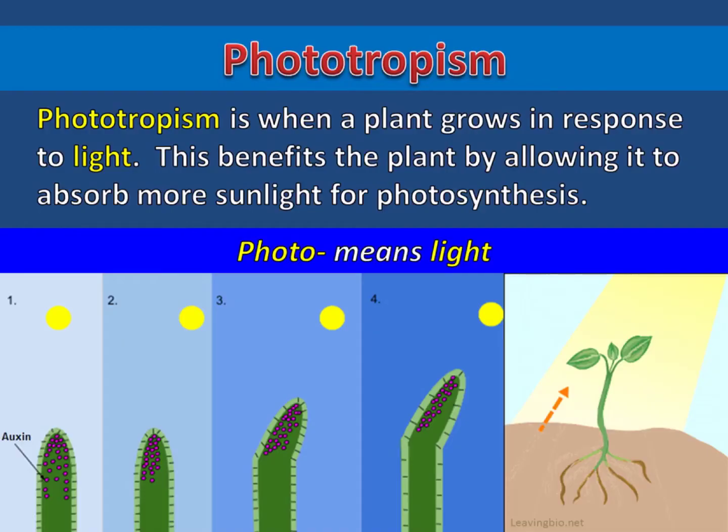Phototropism is when a plant grows in response to light. This benefits the plant by allowing it to absorb more sunlight for photosynthesis.